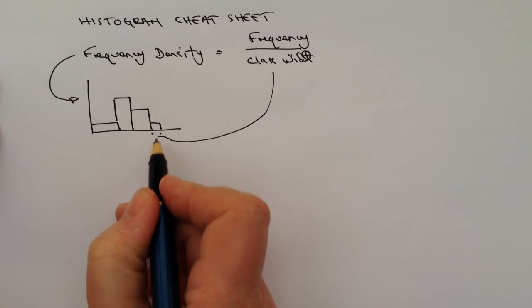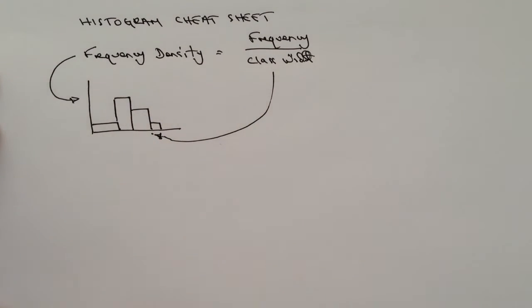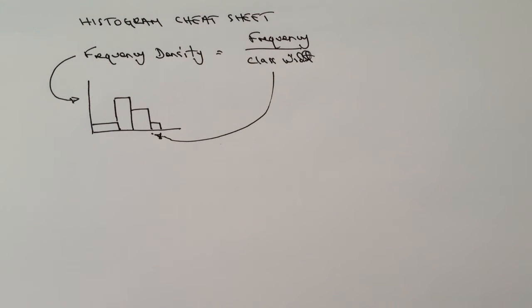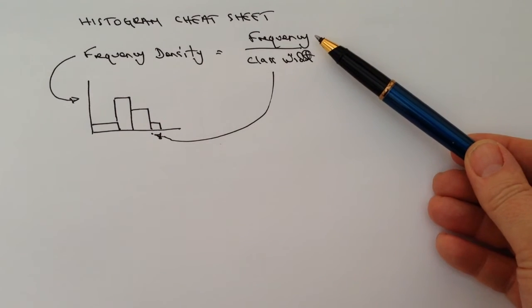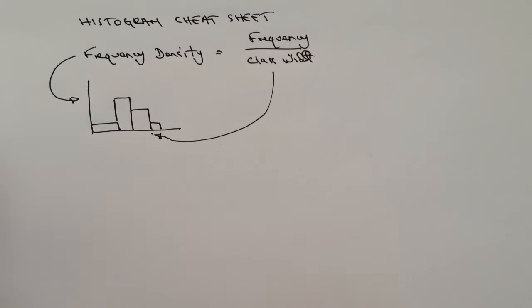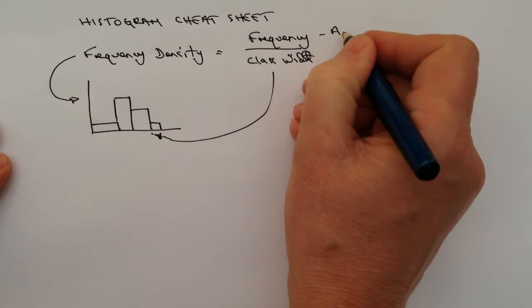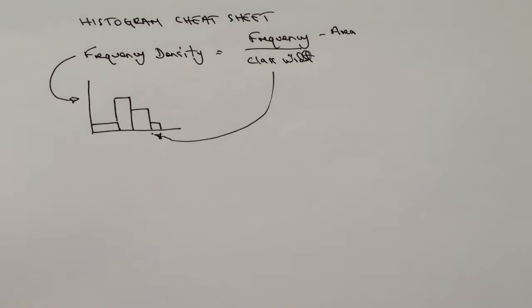That's the class width for this formula. The only other thing you need to be aware of is the frequency, and that's represented by the area of each of the bars.